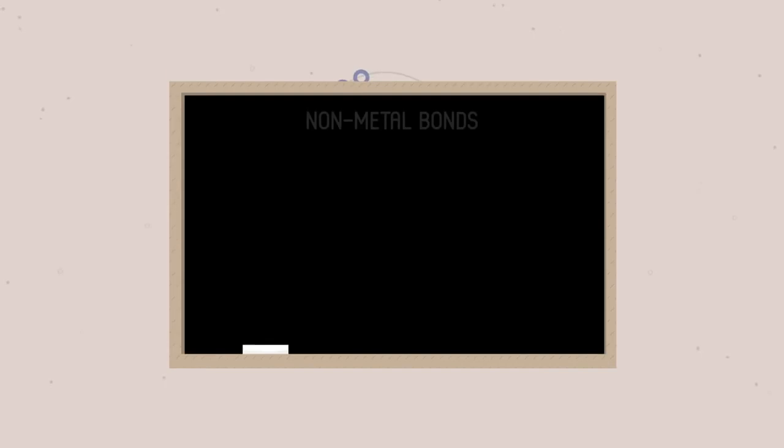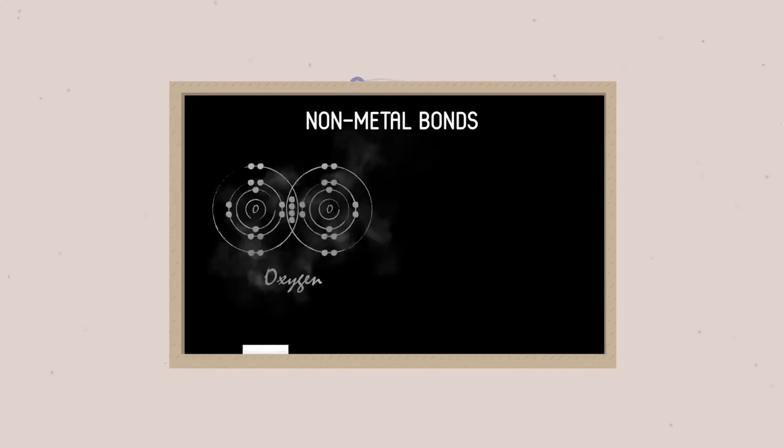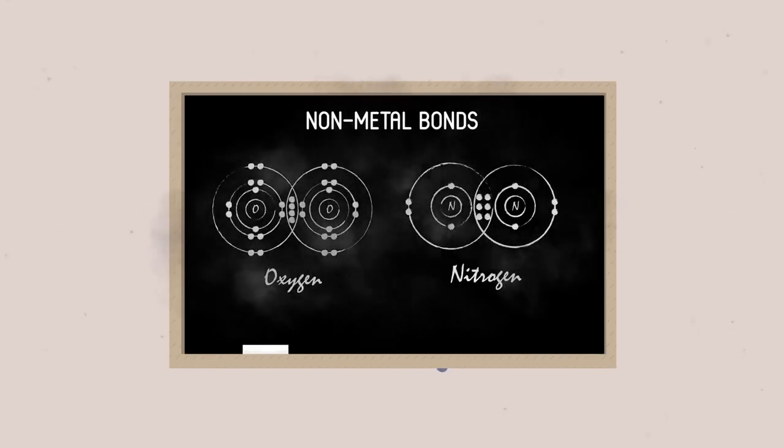If there is space in the outer shell, a nonmetal atom can form double or triple bonds, like in oxygen or nitrogen.